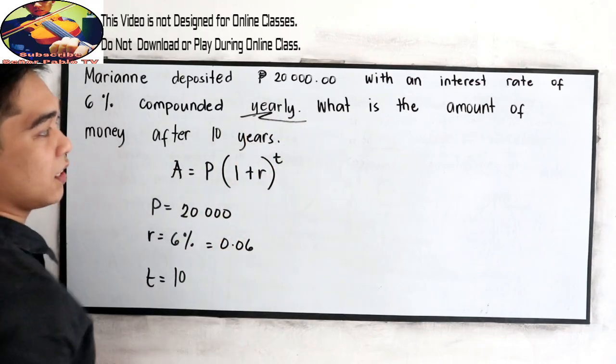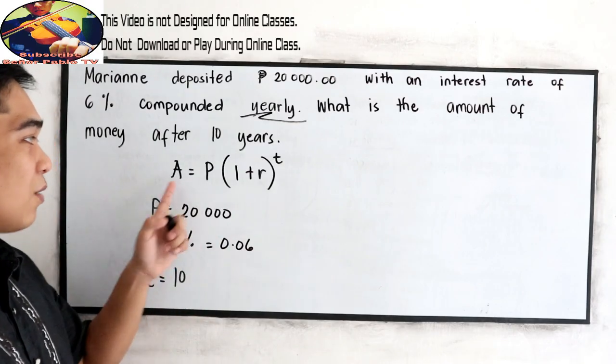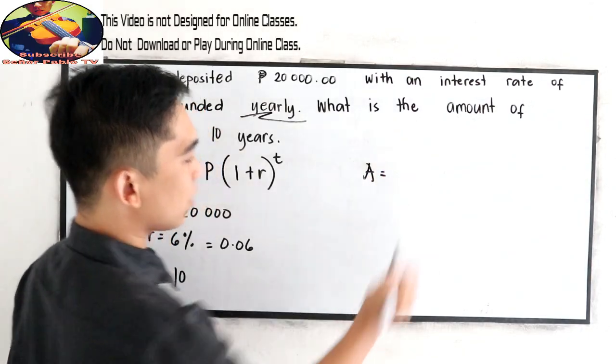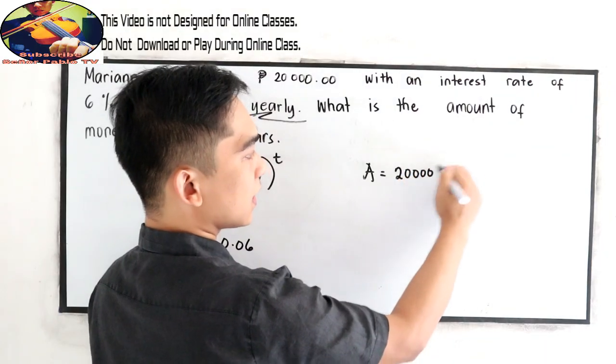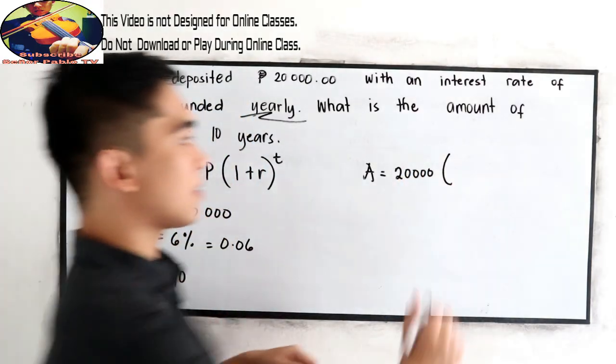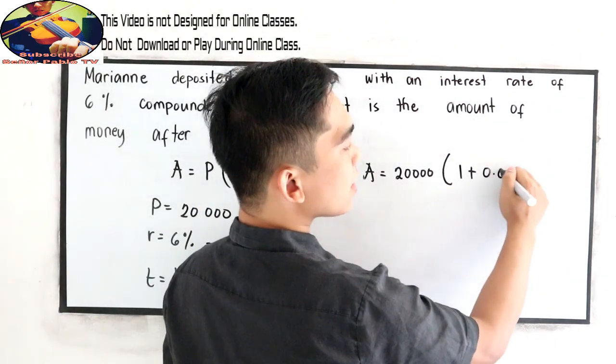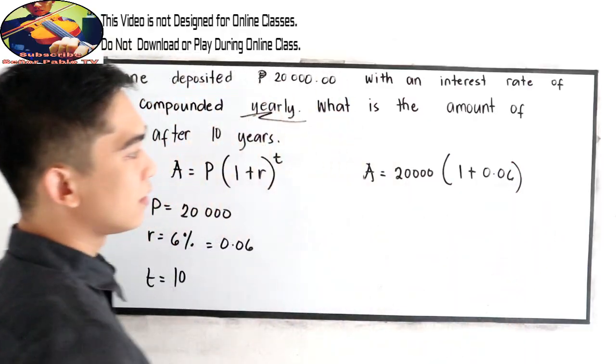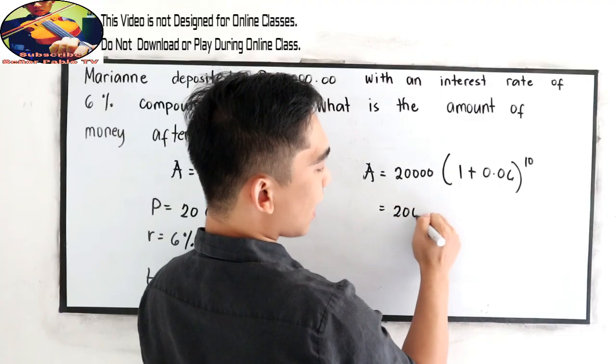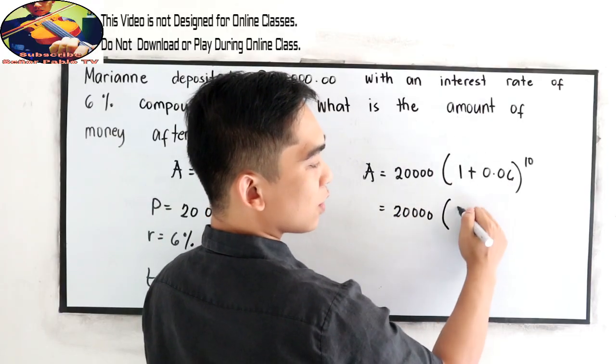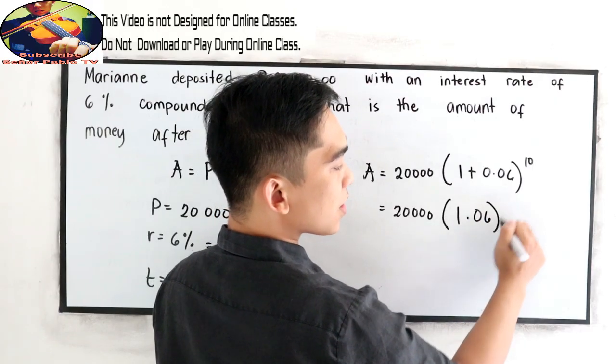And our time is 10 years. Compounded yearly, so time is 10. Now substitute. Amount is equal to P, 20,000. So 20,000 times 1 plus our rate, 0.06 raised to 10.